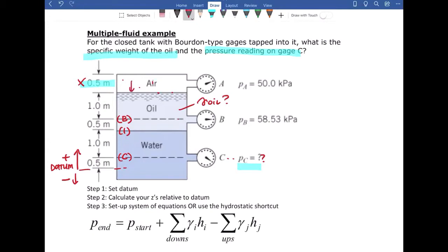So at the top here we have pressure A. So what I'm going to do is I'm actually going to label this elevation here as A, because I know that PA is existing at that elevation.